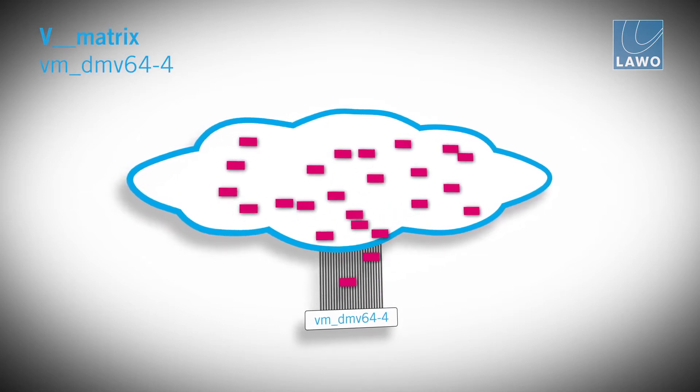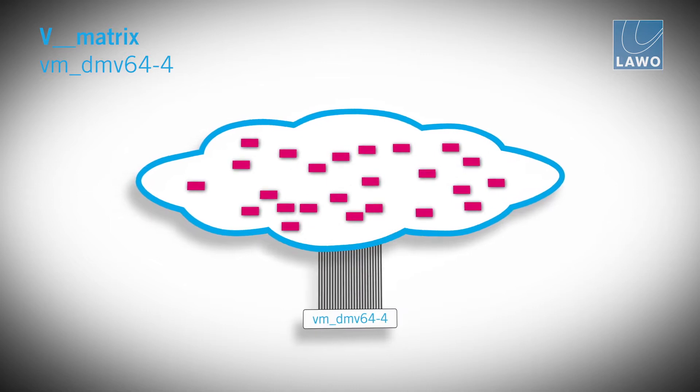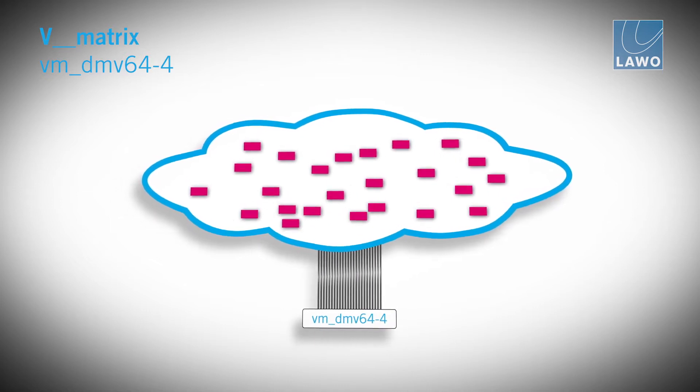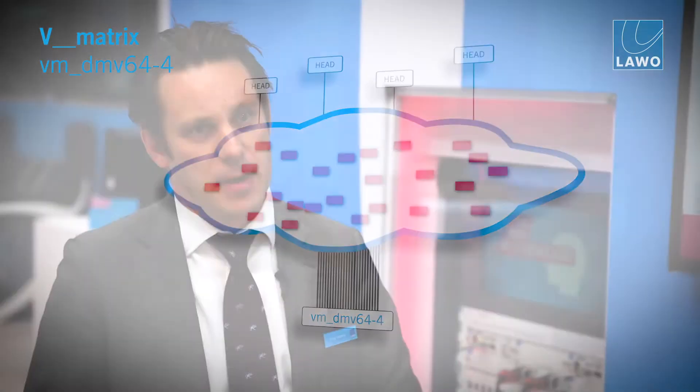In the output stage, the VM DMV 64.4 can create up to 4 output heads. These are generated by subscribing to mipmaps from the network based on the appropriate size that the user has requested in the multiviewer layout tool.